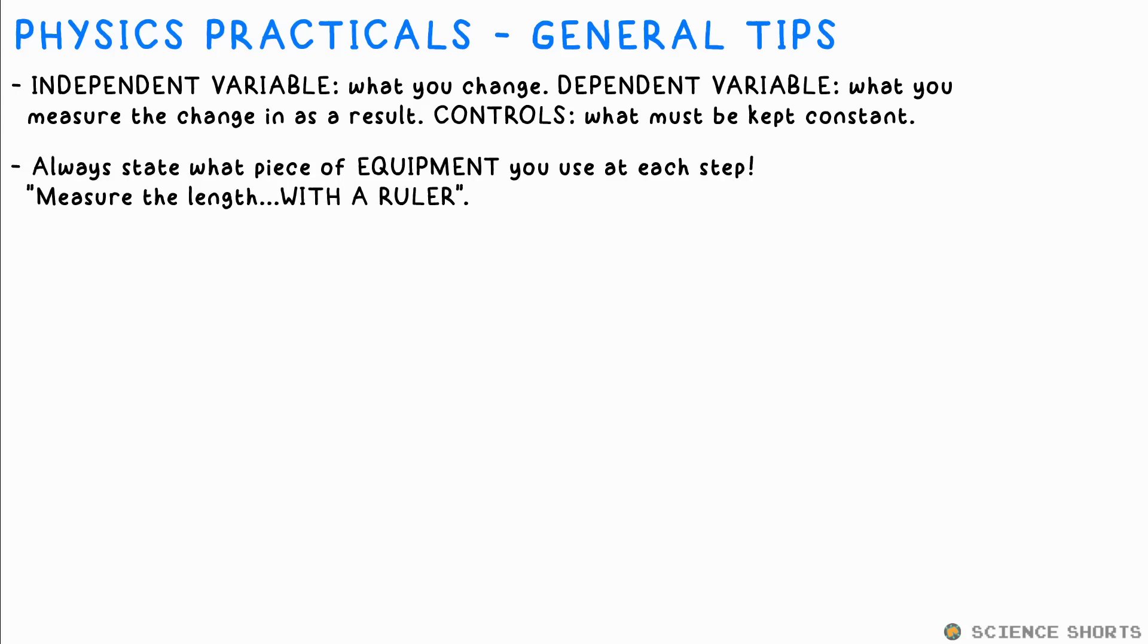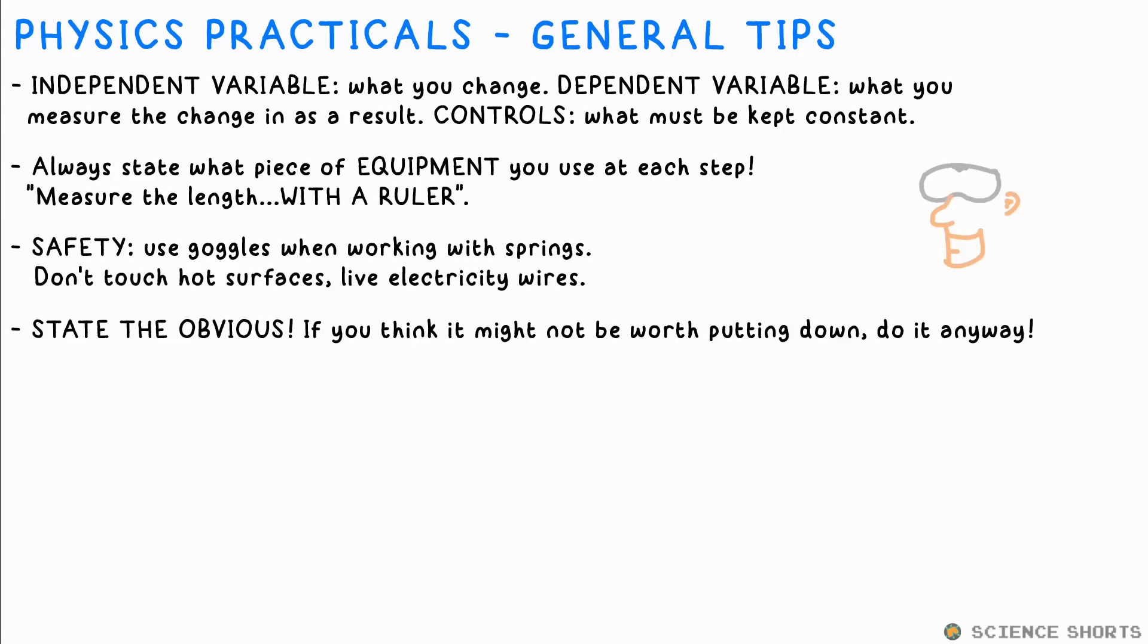Always say what piece of equipment you use for each measurement. Don't just say measure the length of the object. Also add with a ruler or whatever you're using. That's a mark in itself. State the flipping obvious. If you think, surely they don't want me to put that, put it down anyway. You never know what marks you might pick up.